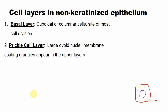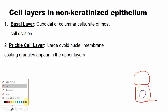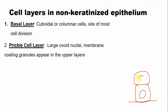The next cell layer is the prickle cell layer, which comprises cells with a large ovoid nucleus. It also comprises all the organelles and individual tonofilaments — no tonofilament bundles are present.